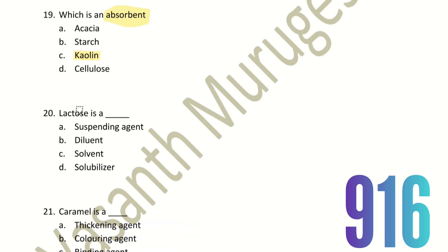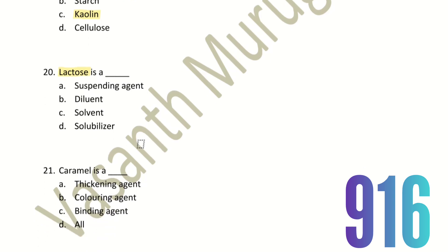Twentieth question: Lactose is a dash. What is lactose used as? The choices are suspending agent, diluent, solvent, and solubilizer. Lactose is particularly used as a diluent. A diluent is used to adjust the quantity of a product. Hence, lactose is a diluent — that is the right answer.